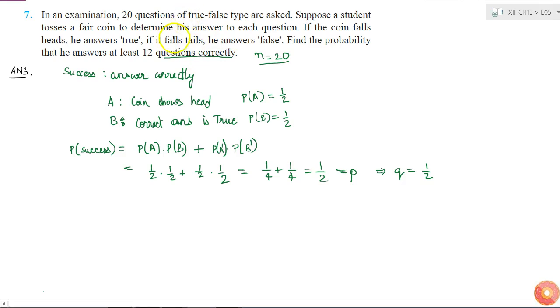So now what should you find? Probability that he answers at least 12 questions correctly out of 20 questions. That is, I have to find the probability of X greater than or equal to 12.